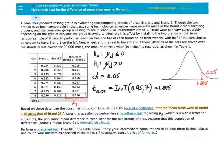Assume that this population of differences, Brand 1 minus Brand 2, is normally distributed. Perform a one-tail test, then fill in the table below. Carry your intermediate computations to at least three decimal places, and round your answers as specified in the table.